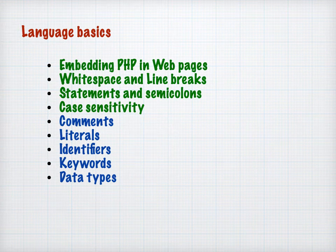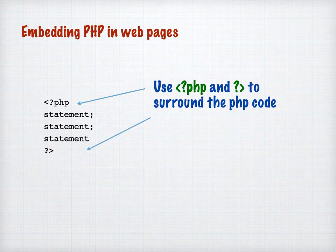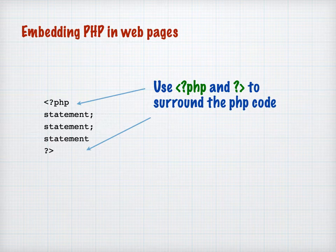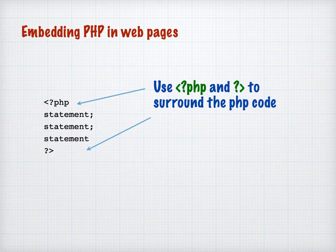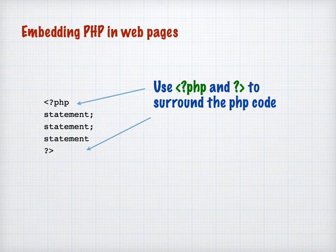We're going to work our way through these first four. How do we actually embed PHP in web pages? To do this, we wrap up our PHP code using this notation here. We use a less-than symbol and a question mark with PHP to indicate the start of a PHP block or statement. Then we use a question mark and a greater-than symbol to indicate the end of the block, and between those two points you can have PHP code — it has to be just PHP code. You can't put HTML or other things in that gap. When the web server identifies a PHP block, every single part will be processed as PHP, so if there's anything else in there you'll get an error message.